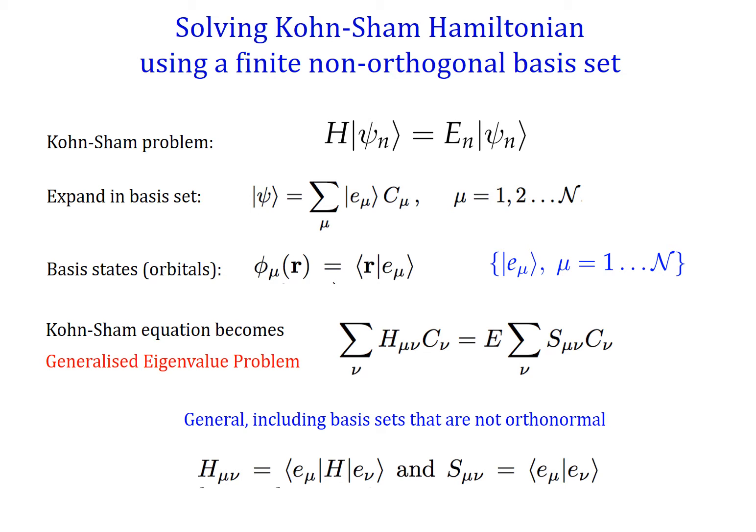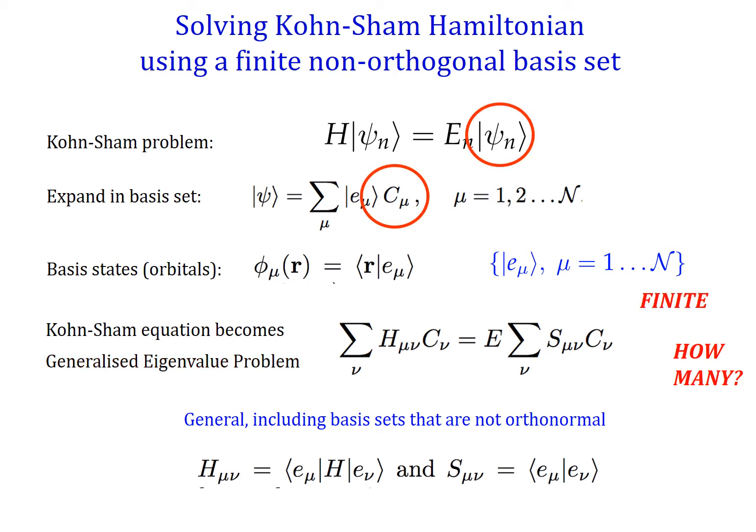Once we have these two matrices we can obtain the coefficients, which are the unknowns. The unknown is transformed from the unknown Kohn-Sham wave functions — single-particle wave functions — to the unknown coefficients. If the basis set is a finite basis set, this is always going to be an approximation. How many functions do we need for a good approximation? That depends on the quality of the basis functions we chose in the first place.